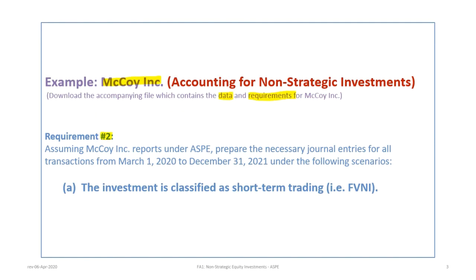This tutorial follows the McCoy Inc. example, Requirement 2, which is to prepare all the necessary journal entries for all transactions from March 1, 2020 to December 31, 2021. Scenario 2A is where the investment is classified as short-term trading, and for ASPE that means fair value through net income, or FVNI.